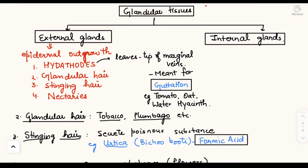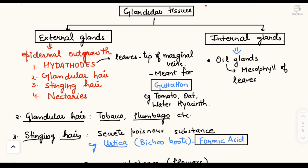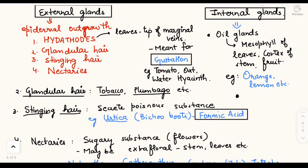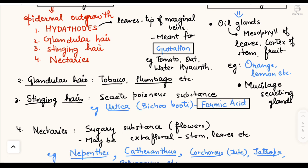Internal glands include oil-producing glands seen in the mesophyll of leaves, cortex of stems, and fruits. For example, in orange and lemon, oil glands are present in their leaves and fruit rinds. We also have mucilage-secreting glands.